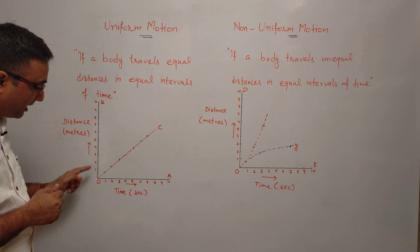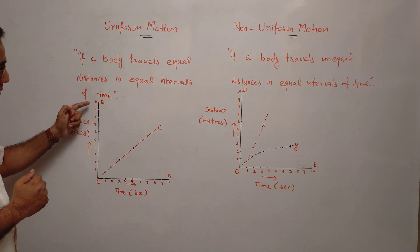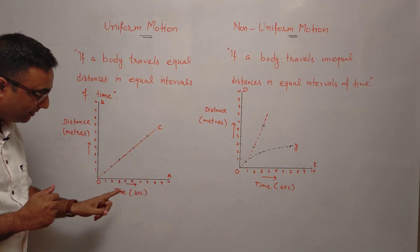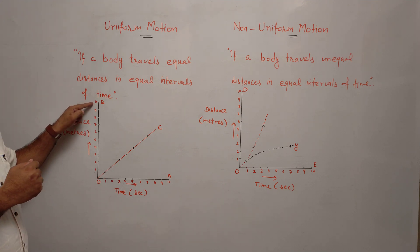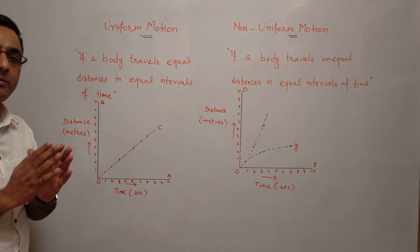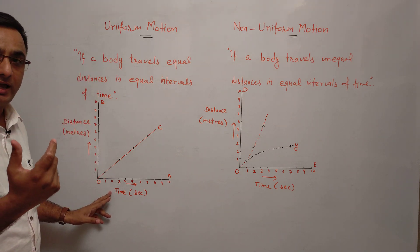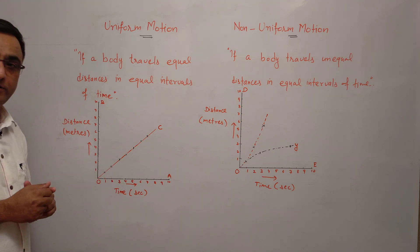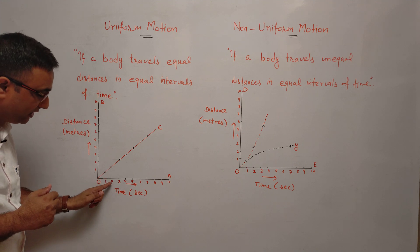Uniform motion की बात करें। आपके सामने यह graph है — यह distance-time का graph है। Vertical axis पर distance रखा है, distance meters में है, और horizontal axis में time है, time seconds में है। मान लीजिए कोई object total 10 meters की distance 10 seconds में travel करता है। इसका मतलब है उसकी speed one meter per second है। यह uniform motion है — first second में उस body ने एक meter की distance travel की, दूसरे second में भी एक meter की distance travel की।